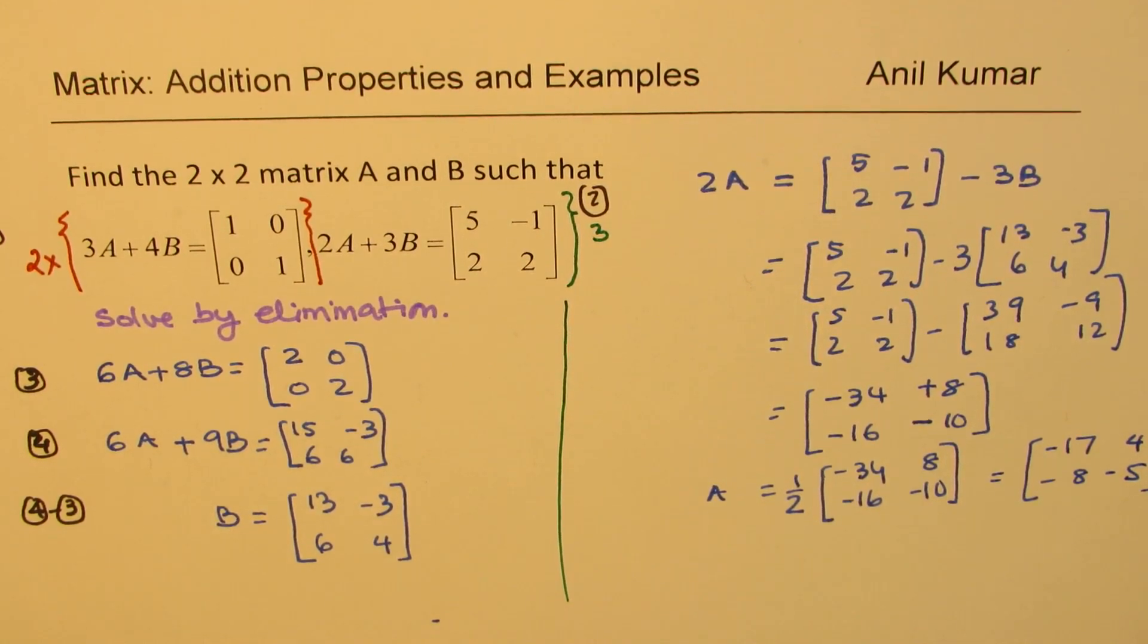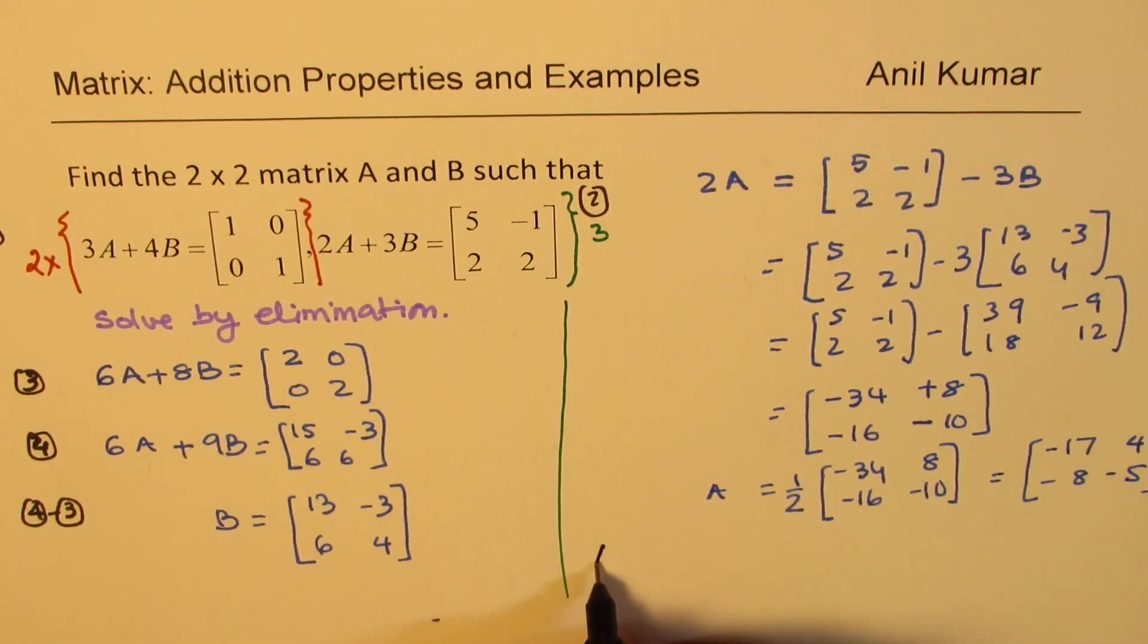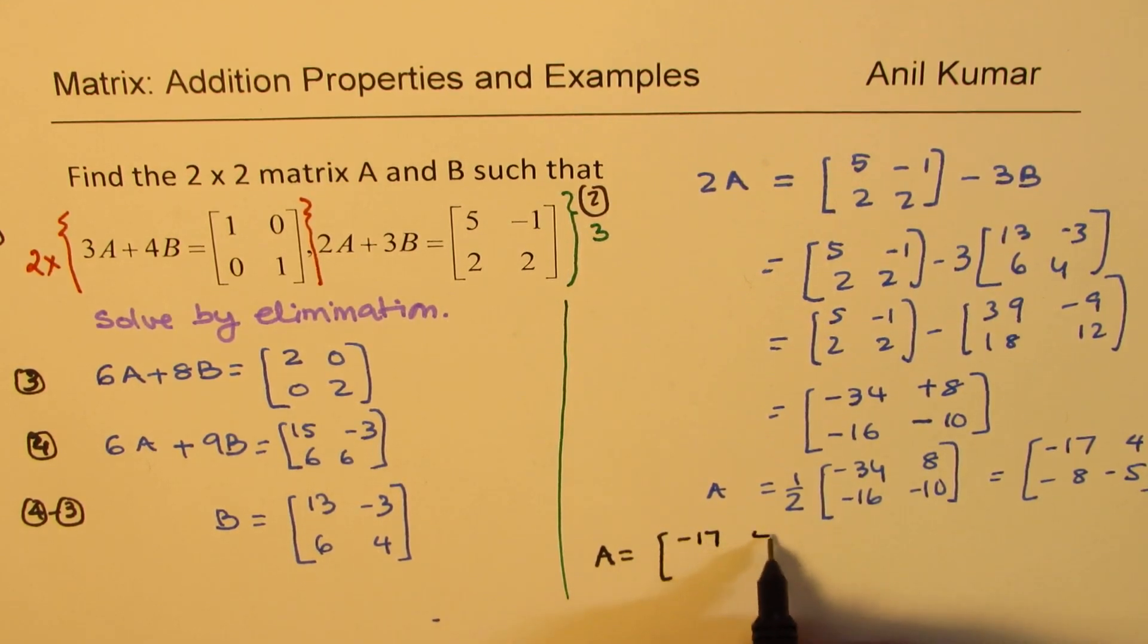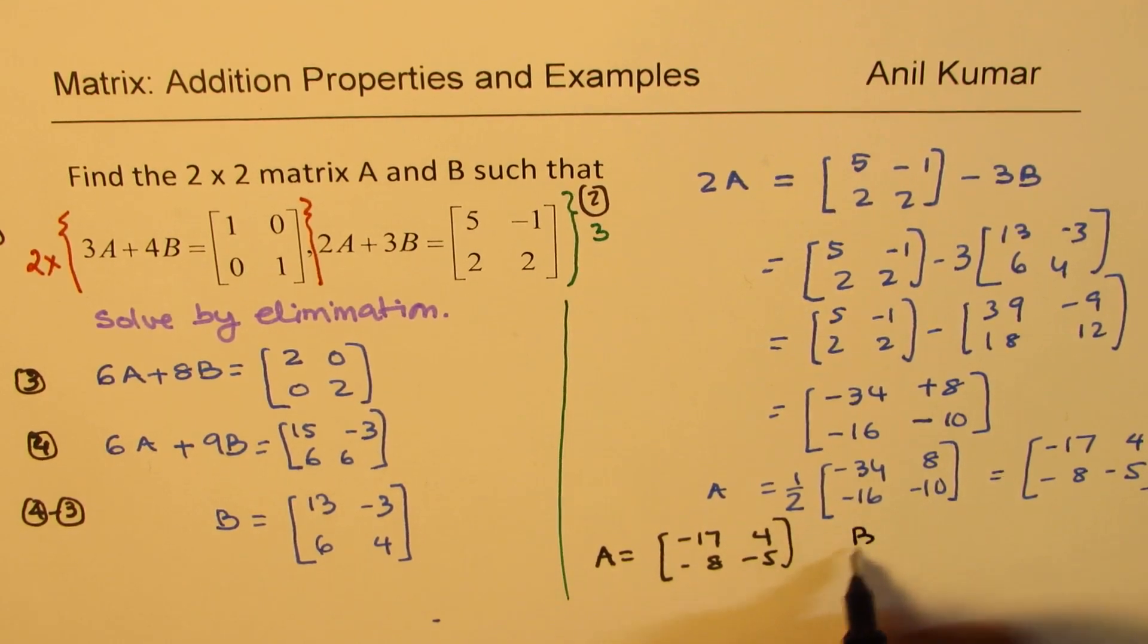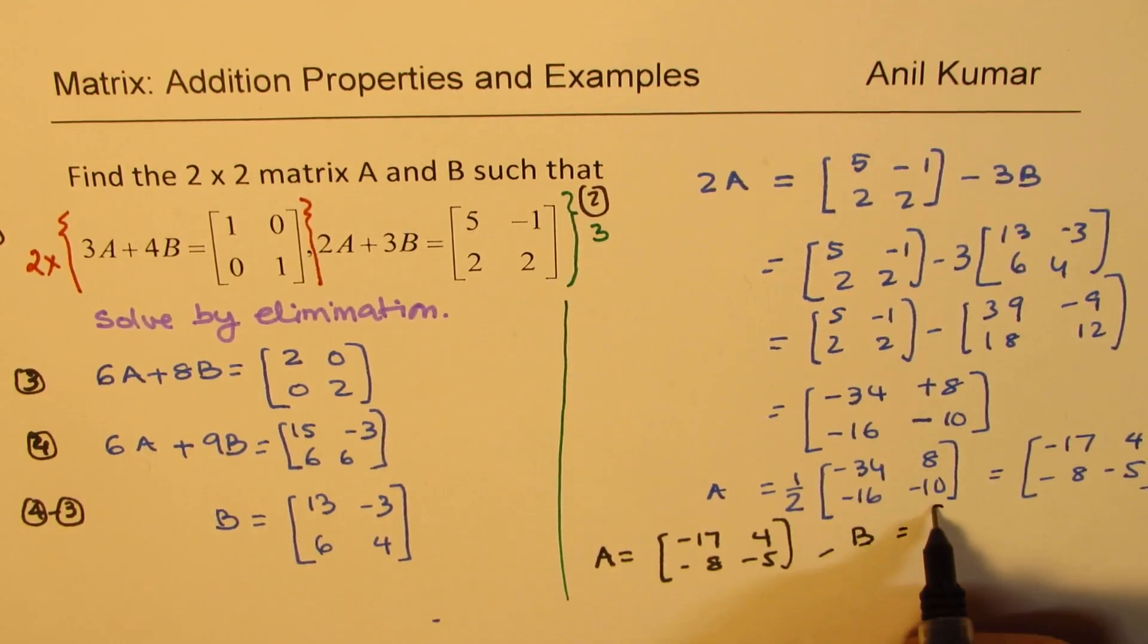So that is how you get your answer. So our answer here is matrix A equals [-17 4; -8 -5] and matrix B equals [13 -3; 6 4]. Great.